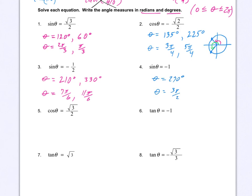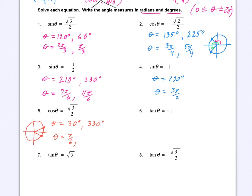Cosine equal to root 3 over 2: cosine is positive only in quadrants one and four. So it's got to be angles from those two quadrants. In quadrant one, cosine equals root 3 over 2 at 30 degrees — cosine is the x-coordinate. By symmetry it's also at 330 degrees. So the answers are 30 degrees and 330 degrees, which in radians is π/6 and 11π/6.